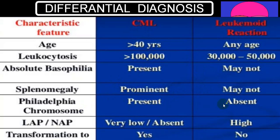The Philadelphia chromosome is present in CML and is always absent in leukemoid reaction. Leukocyte alkaline phosphatase (LAP) and neutrophil alkaline phosphatase will be very low or absent — quite frequently absent — in CML, but will be high in case of leukemoid response.